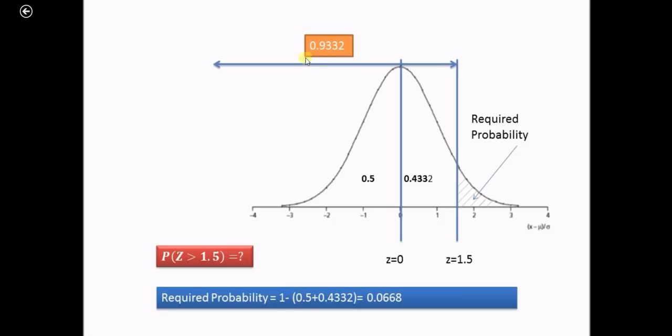So 1 minus 0.9332 will be 0.0668. In this way, you can read the values of cumulative normal probability from the table and the required probability can also be calculated by using the concept of this cumulative normal probability.